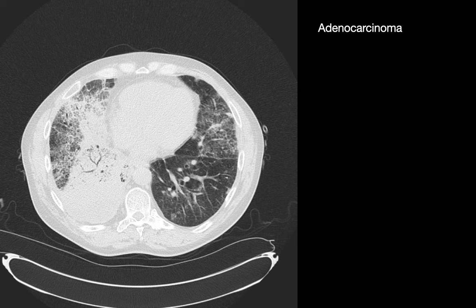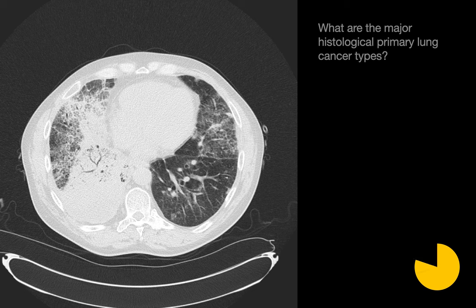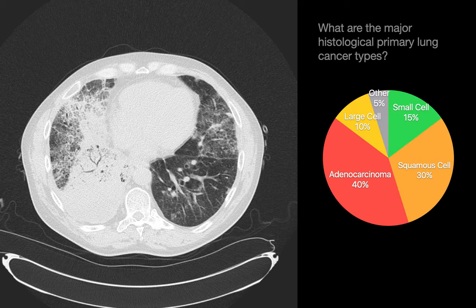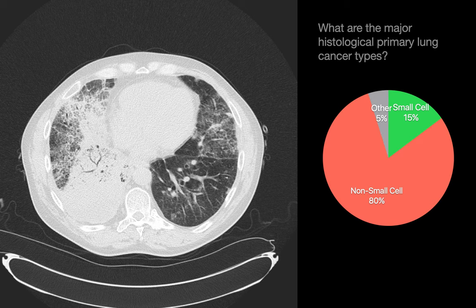This case is an example of multifocal lung adenocarcinoma, and the consolidative regions corresponded to regions of invasive mucinous adenocarcinoma. What are the four major histological types of primary lung cancer? The four major types are adenocarcinoma, squamous cell carcinoma, large cell carcinoma, and small cell carcinoma. The first three are referred to together as non-small cell lung carcinoma. This pie chart illustrates the relative distributions of each type, with non-small cell lung cancers outnumbering small cell lung cancers by around 5 to 1.